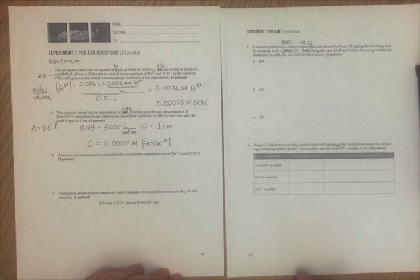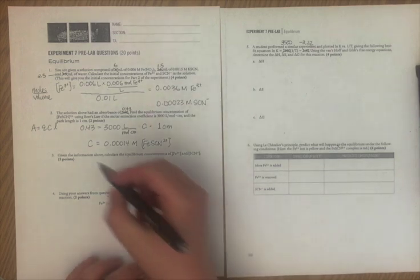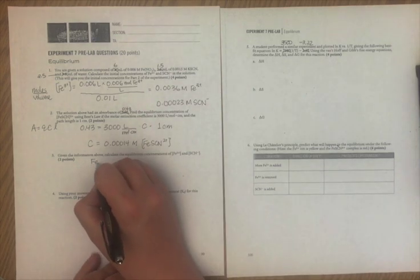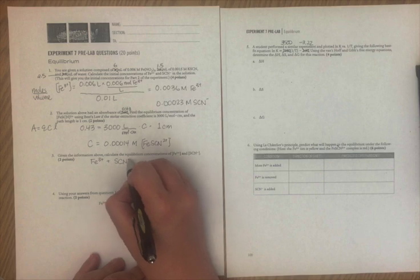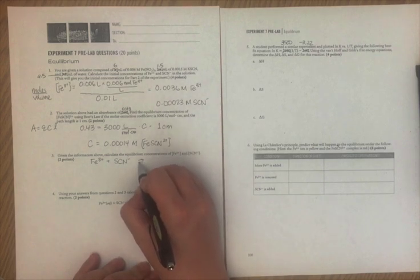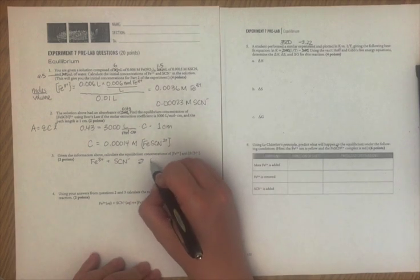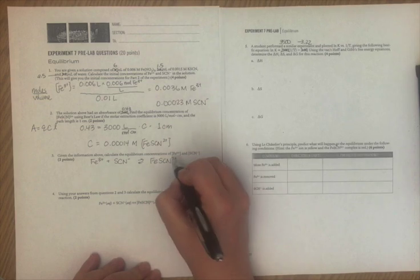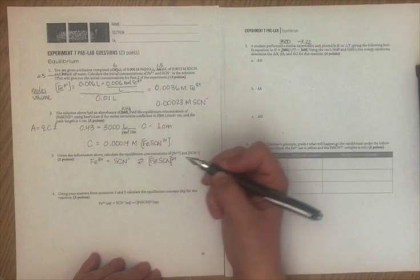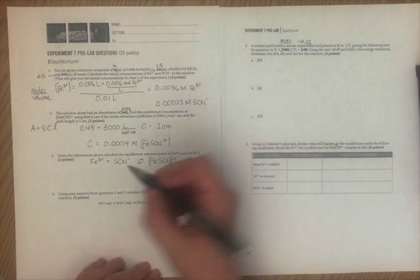Okay, this will make a little more sense when we do the next question. So we have Fe³⁺, it reacts with SCN⁻, and we have an equilibrium forming with our complex ion.